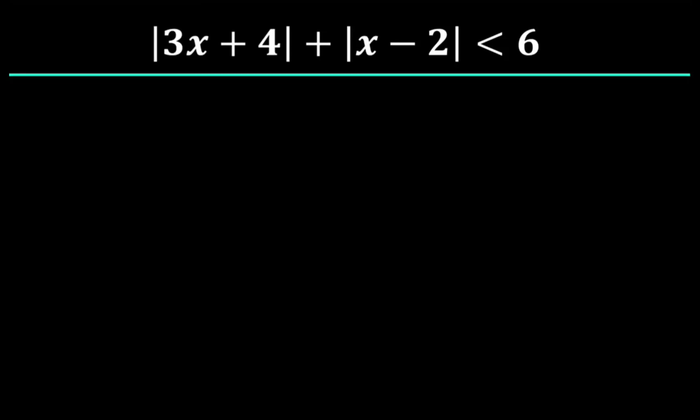Hello guys, you are once more welcome to this channel. In this video we're going to be solving this absolute value inequality. We are given that the absolute value of 3x plus 4, plus the absolute value of x minus 2, is less than 6, and we need to find the set of values of x that satisfies this inequality.